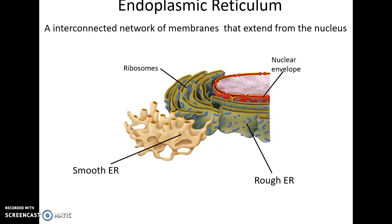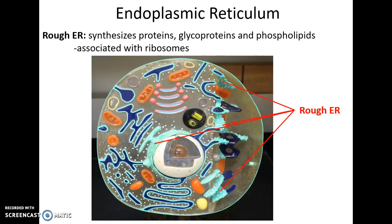The rough and smooth endoplasmic reticulum make up the endoplasmic reticulum — interconnected membranes extending from the nucleus through the cytoplasm. The rough endoplasmic reticulum has ribosomes on it, visible as bumps, and is where the synthesis of proteins, glycoproteins, and possibly lipids occurs.